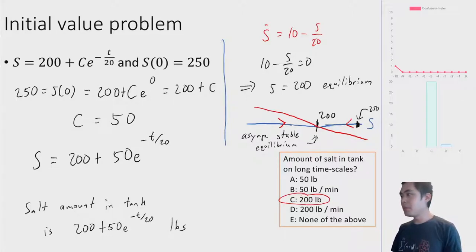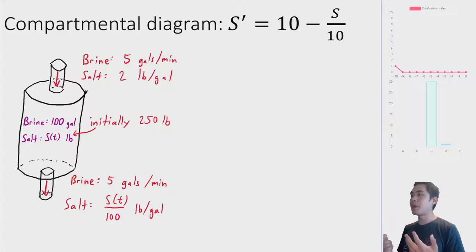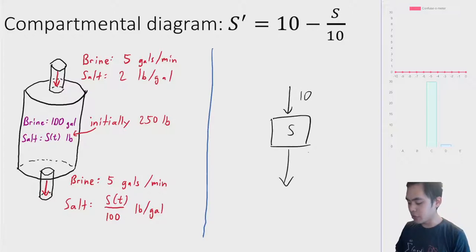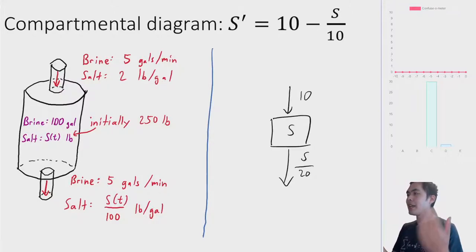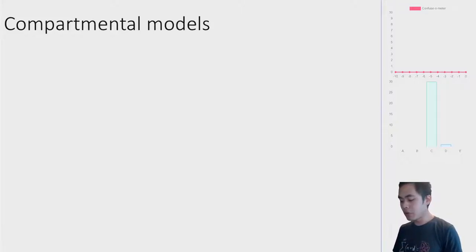This is how we solve this kind of word problem. It turns out that problems with something going in and something going out are fairly general, and we represent them using compartmental diagrams. Instead of drawing tanks, we draw boxes. So we have a box for S, our input into this box is 10, and our output is S over 20. S-dot increases by 10 and decreases by S/20 per unit time.